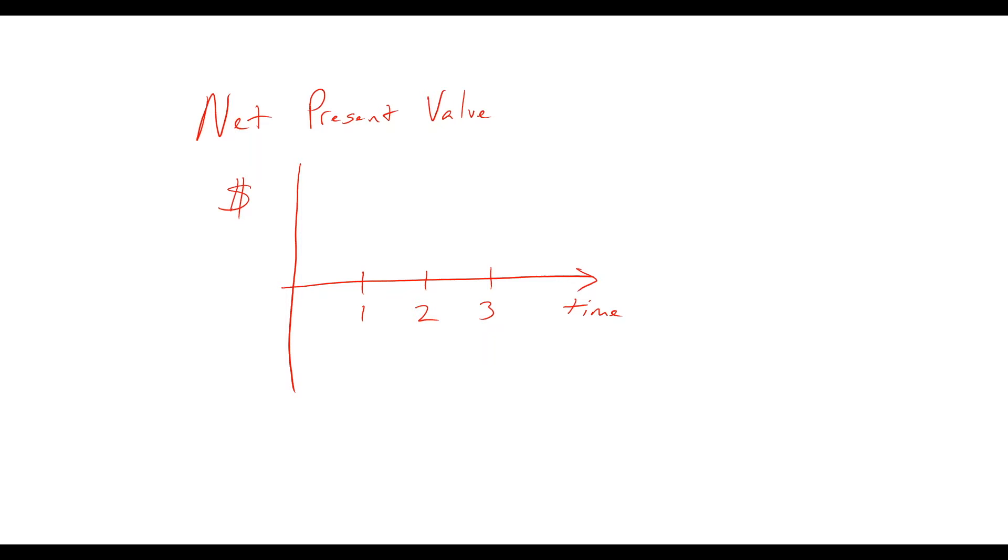We might draw a cash flow diagram that looks like this. When we begin the project, we have to spend some money, and that money is a cost. This diagram shows you that if it's a cost, it's an arrow going down. The x-axis shows years one, two, and three.